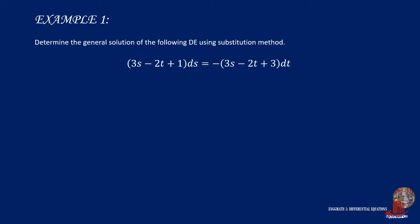Determine the general solution of the following differential equation using substitution method. The equation is: the quantity of 3s minus 2t plus 1 times ds is equal to the negative quantity of 3s minus 2t plus 3 times dt. Check that there are repeating variables in each term of the equation so we can simplify the whole function by substitution. Let us assign variable x for the repeating terms 3s minus 2t.